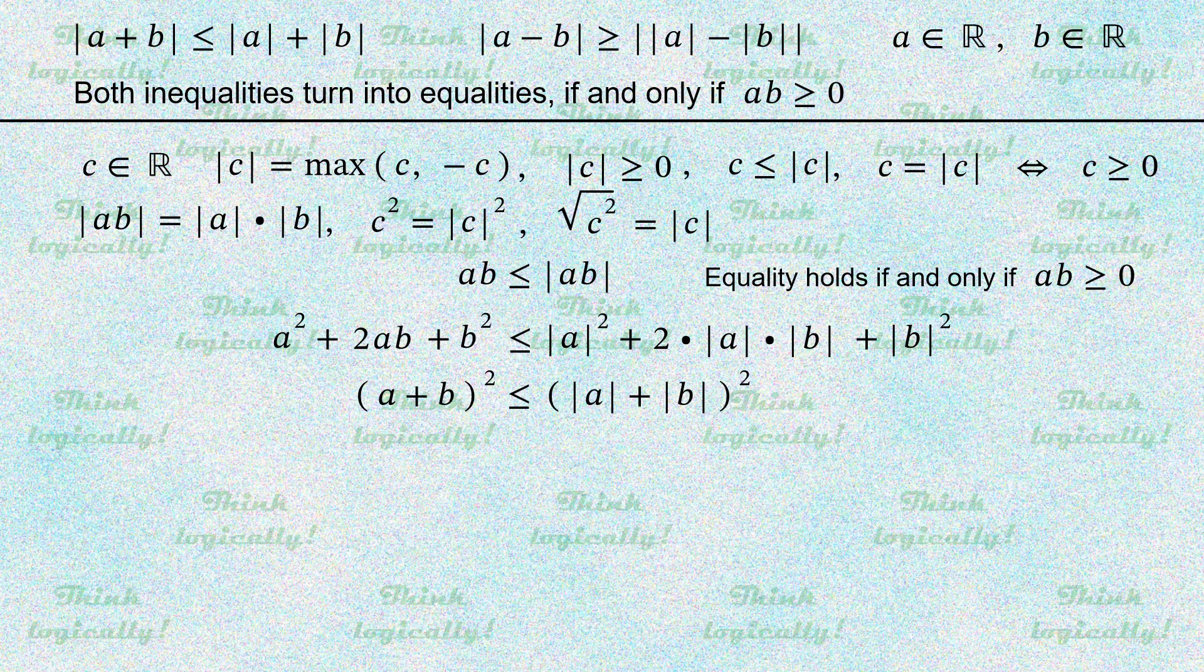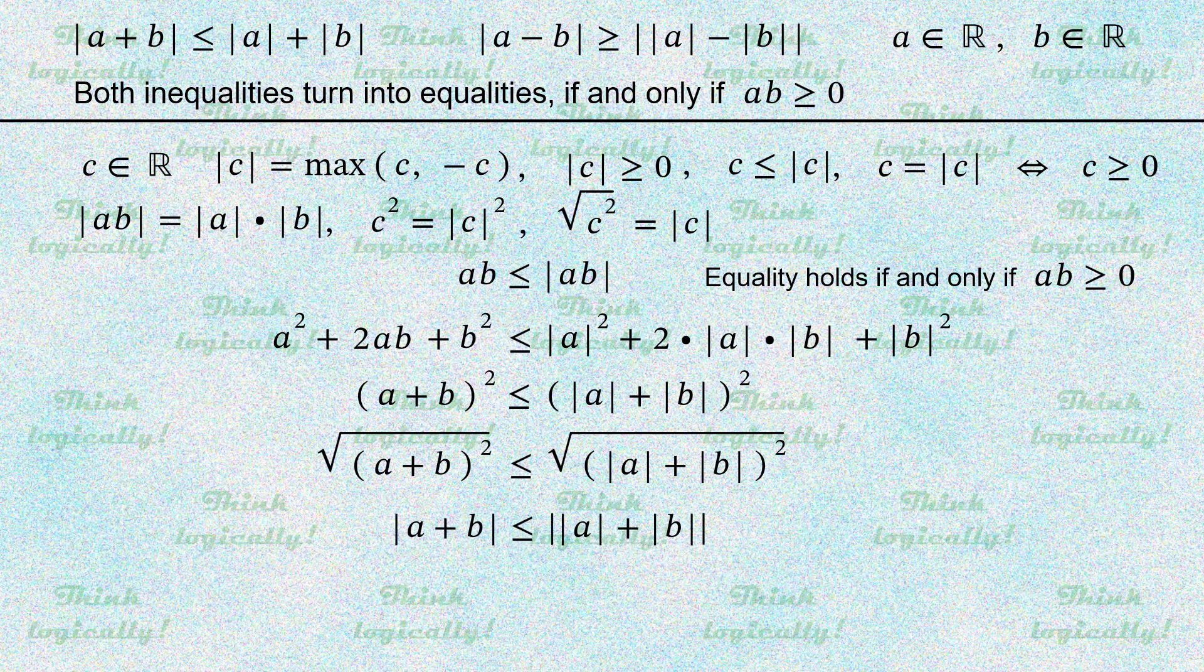Given that square root is a monotonically increasing function, we can take the square root of both sides, then replace each square root with the corresponding absolute value.